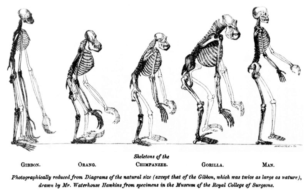Biologists reason that all living organisms on Earth must share a single last universal ancestor, because it would be virtually impossible for two or more separate lineages to have independently developed the many complex biochemical mechanisms common to all living organisms. Life on Earth is based on carbon and water. Carbon provides stable frameworks for complex chemicals and can be easily extracted from the environment, especially from carbon dioxide. There is no other chemical element whose properties are similar enough to carbon's to be called an analogue.